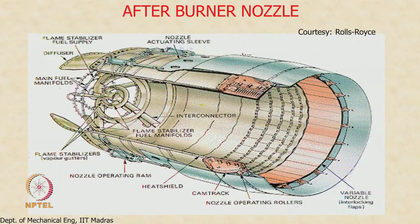In the last class, we looked at an ordinary nozzle for a turbojet engine and saw how it operated in thrust reverse mode. Today, we will start our lecture by looking at the nozzle for an afterburner. The afterburner nozzle has to be a little more special because it has to accomplish additional things beyond the two we already discussed.